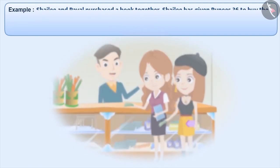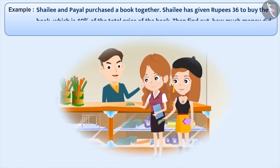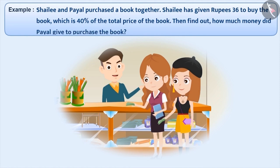Next example, Shailee and Payal purchased a book together. Shailee has given Rupees 36 to buy the book, which is 40% of the total price of the book. Then find out how much money did Payal give to purchase the book. This example seems very complicated, but if we use the correct understanding of percentage, then we can obtain the answer very easily. So let's find the solution of this problem.